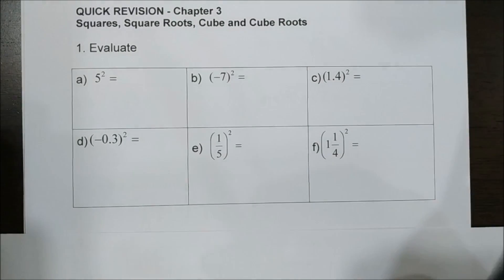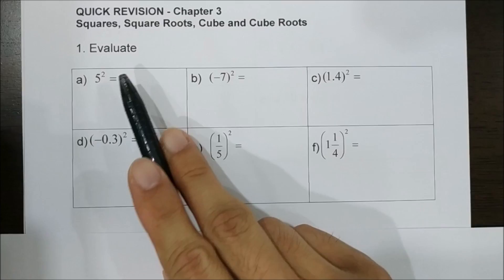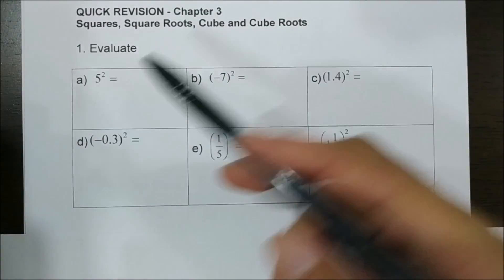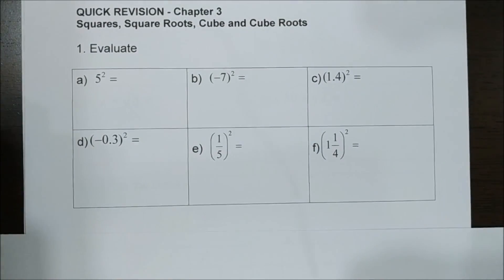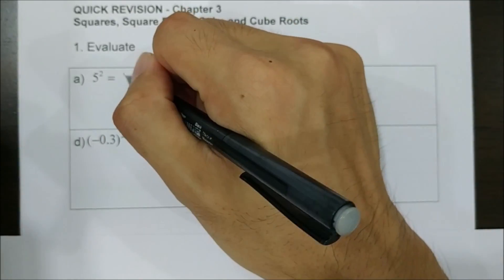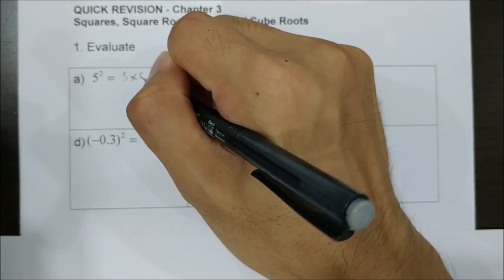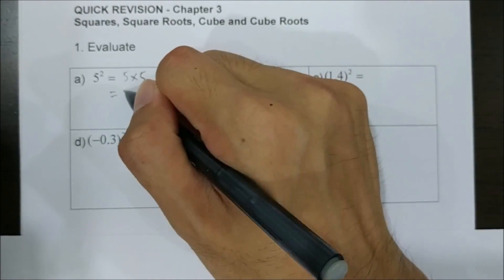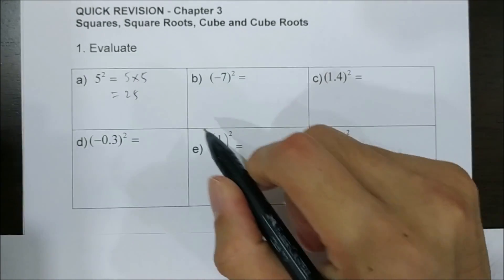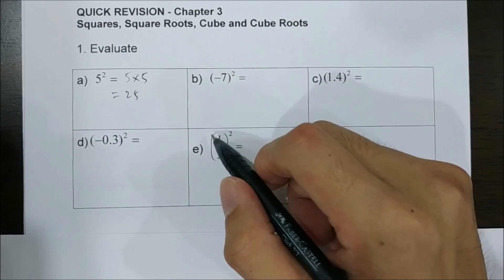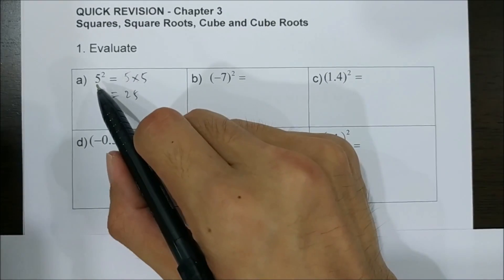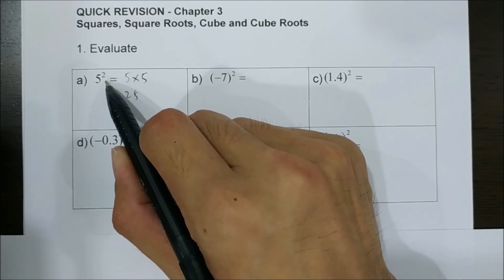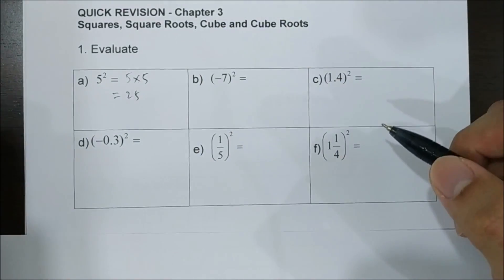So we start off, we try to evaluate — means to find the value of 5 squared. 5 squared means 5 times 5 equals to 25. Or you can just use a calculator, press 5 squared, you can get 25.